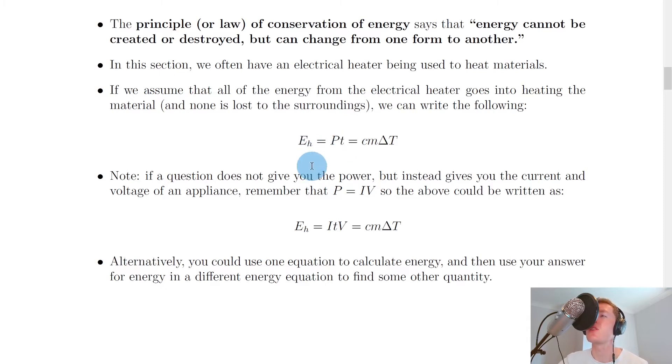And in this case, because we're often dealing with heat energy, we're using E_H. So E_H equals PT is also equal to CM delta T, because we already know the equation for specific heat capacity is E_H equals CM delta T. So we've got these two energy equations equated to each other, but remember this is assuming that no energy is lost to the surroundings.